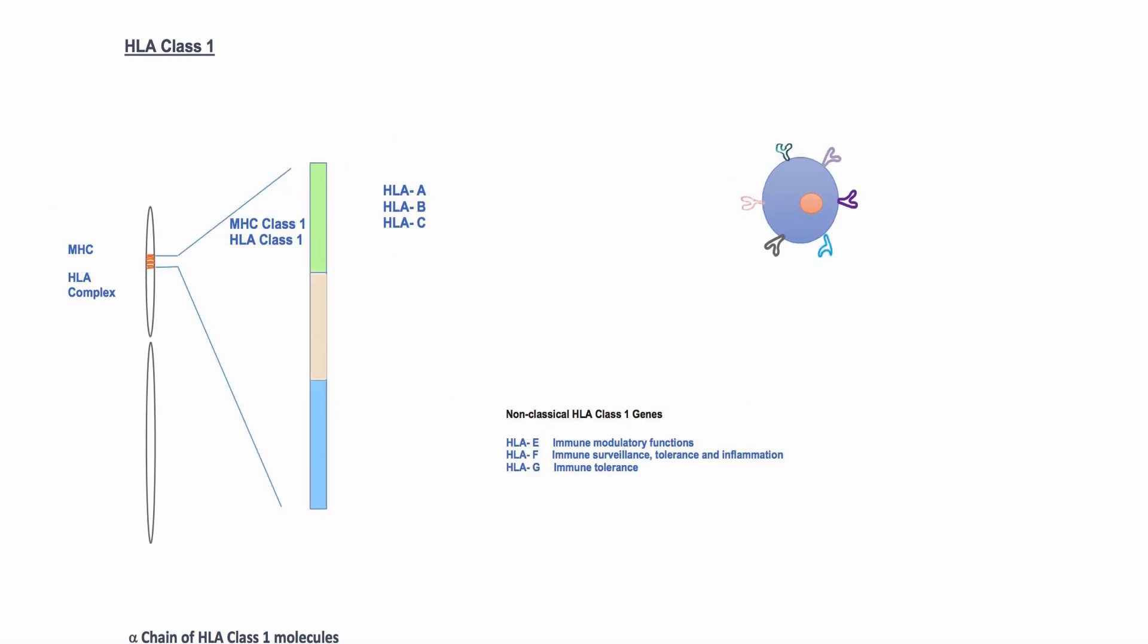HLA class 1 has three classical genes. These genes are highly polymorphic and encode alpha chain of class 1 HLA molecules. Each of these genes encode a class 1 molecule that is slightly different in structure than other class 1 molecules.